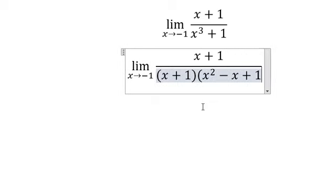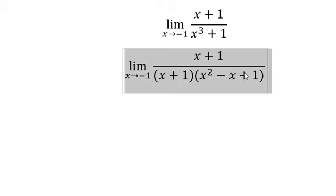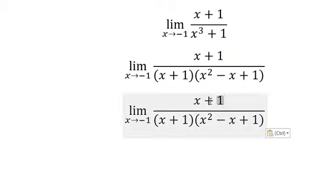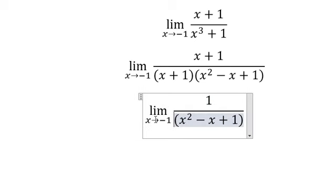Next we simplify (s + 1) and (s + 1). Now we put negative one in here, here, and here.